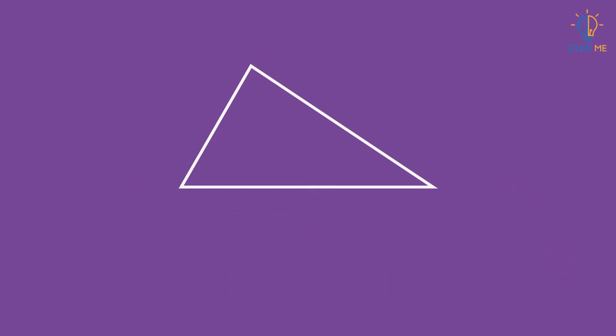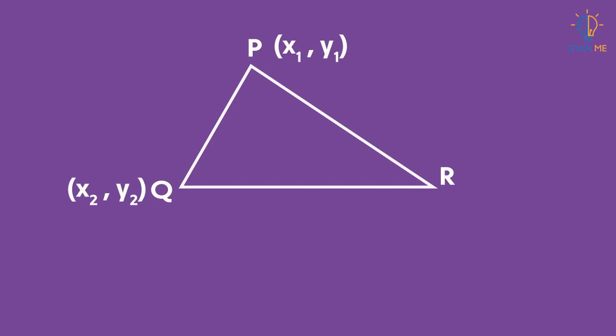Consider the triangle PQR, where the coordinates of its vertices are: P has coordinates (x₁, y₁), Q has coordinates (x₂, y₂), and R has coordinates (x₃, y₃). We are required to find the area of this triangle.